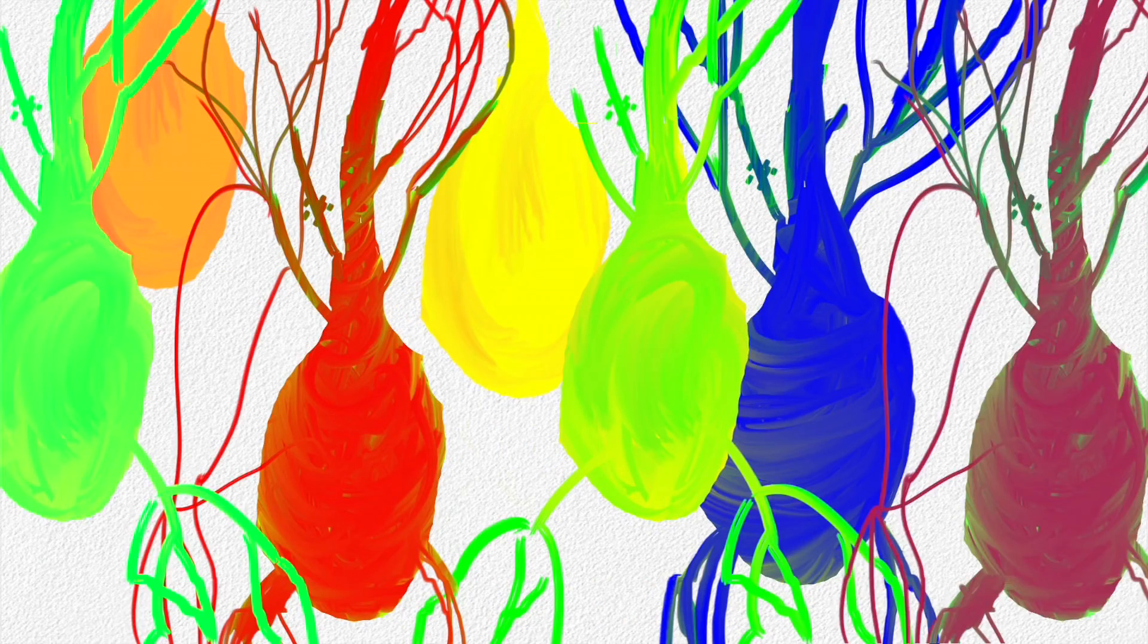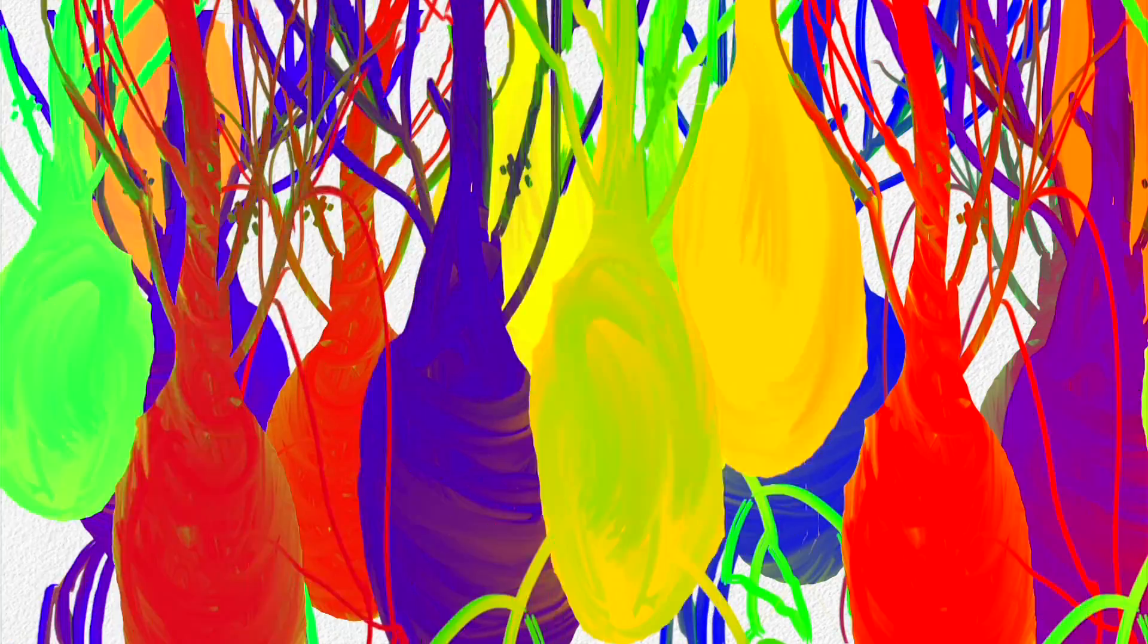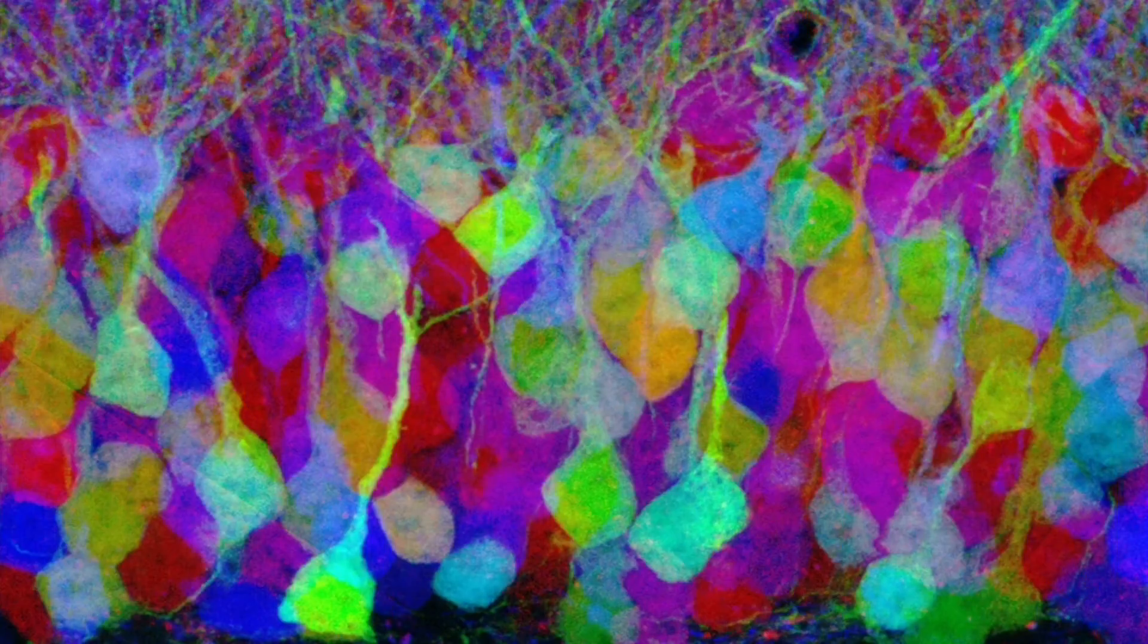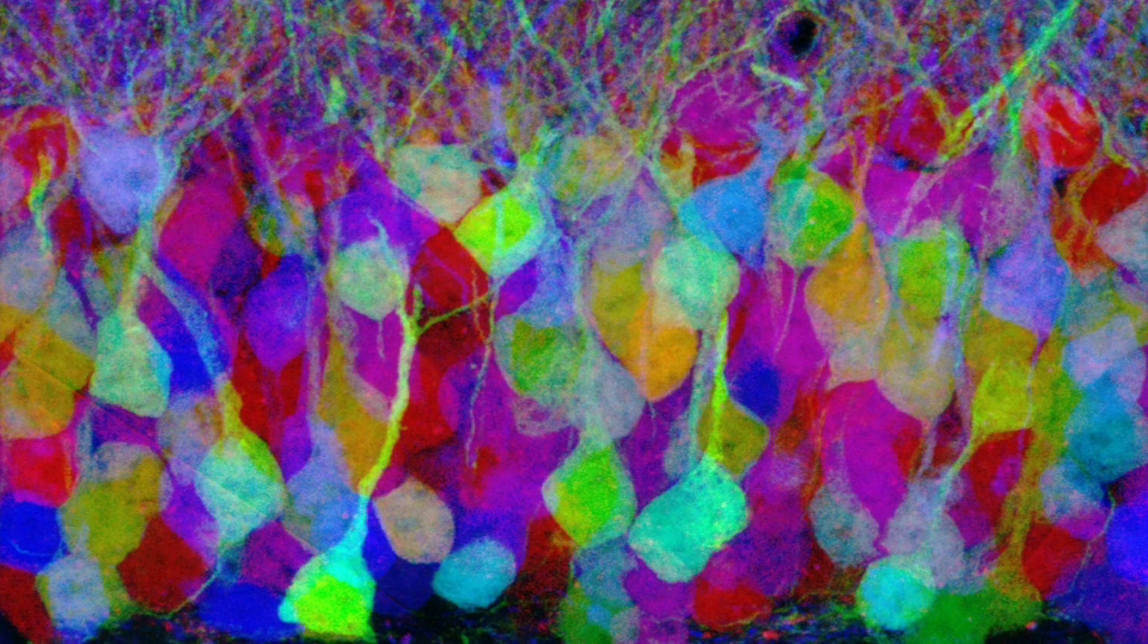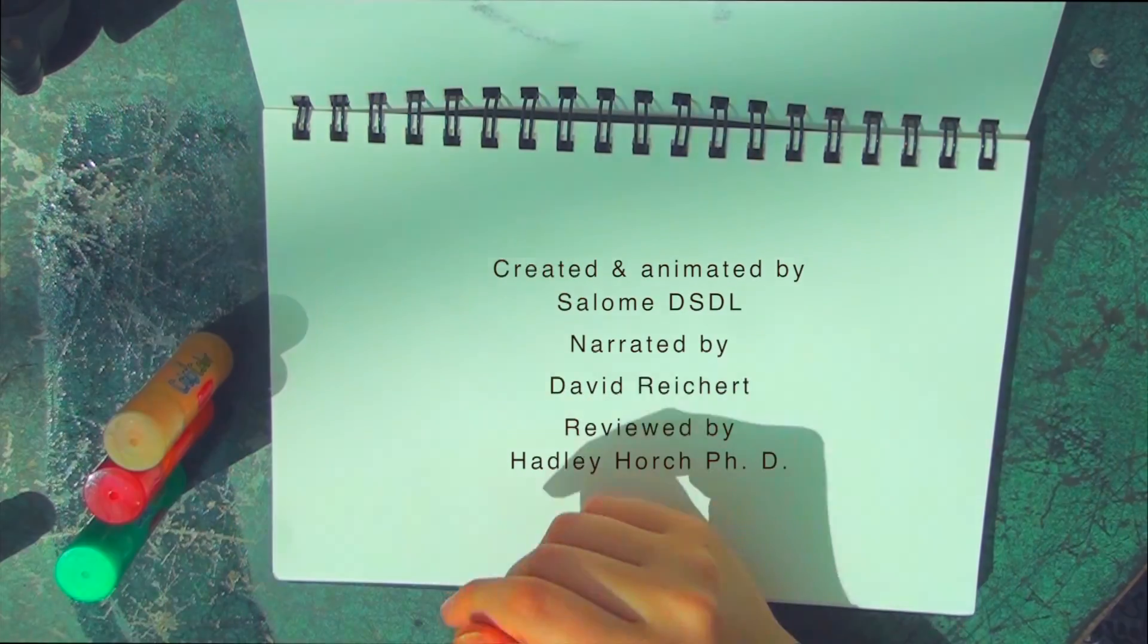Although we focus on Cre-Lox here, many systems with similar modes of action, such as Flp-FRT, attP and attB, also exist. These techniques have opened endless possibilities to make research on neurons and gene expression more efficient and faster.